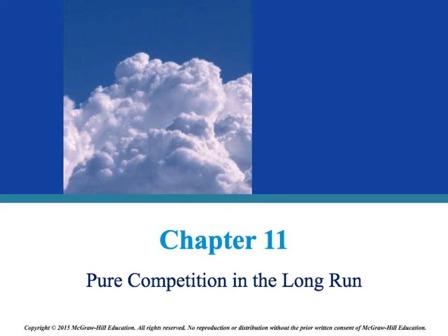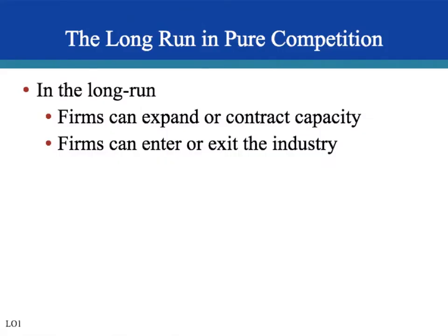Chapter 11 continues the discussion of pure competition, now looking at purely competitive firms in the long run. The long run is a time period long enough for firms to increase or decrease their capacity — such as plant size or equipment — and for new firms to enter or existing firms to exit the industry.